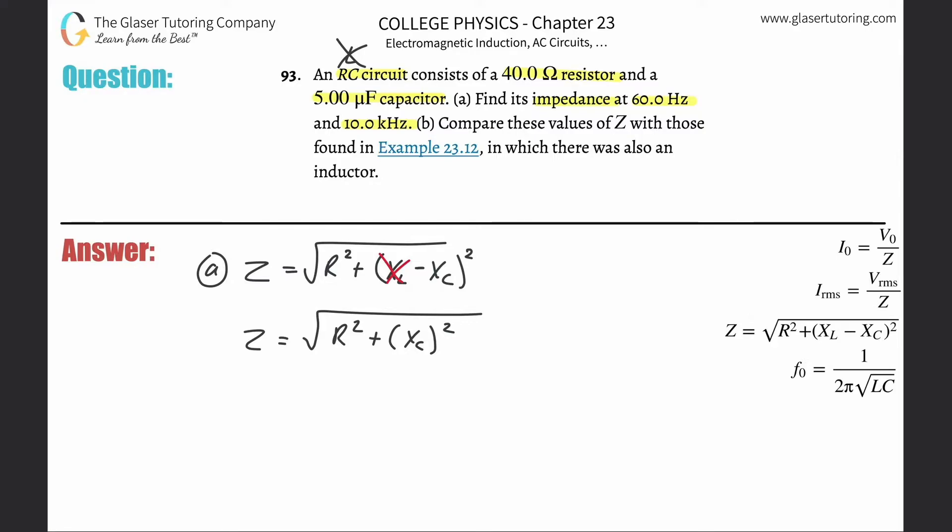The formula for reactive capacitance is one divided by two pi times the frequency times the capacitance.